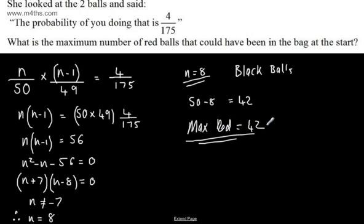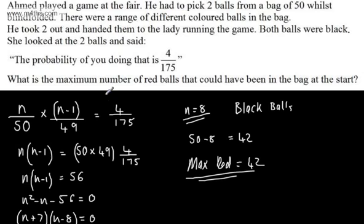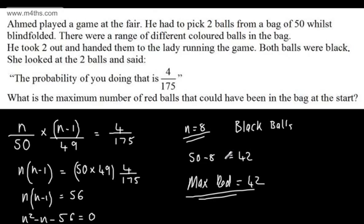So quite a tricky question, but once we set it up now with an equation here, we can solve to find the number of black balls. And if we know they're 50 of different colours, they might only be red and black, so the maximum possible amount of red balls at the start is going to be 42.